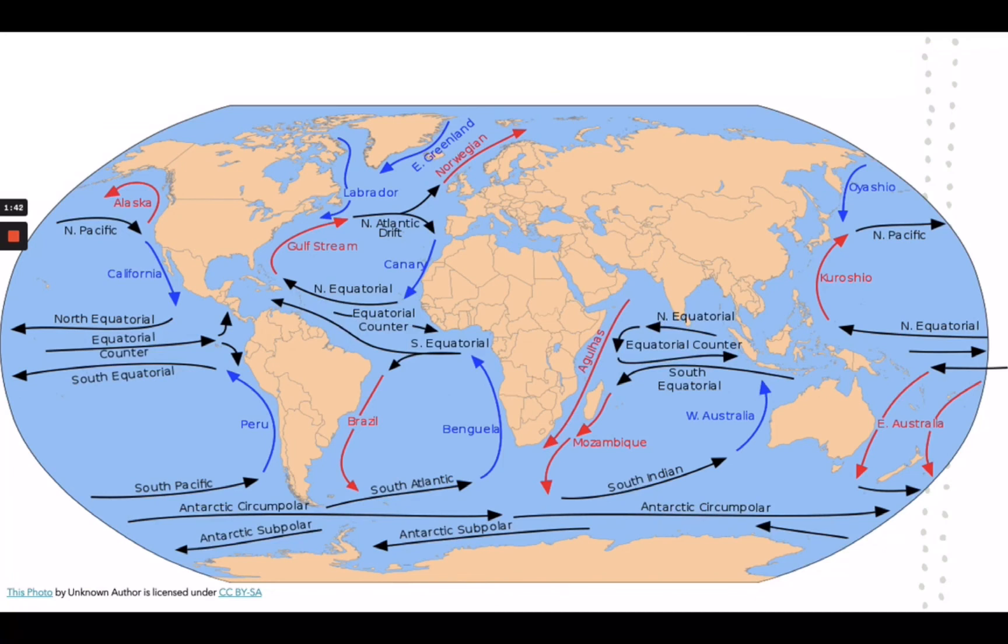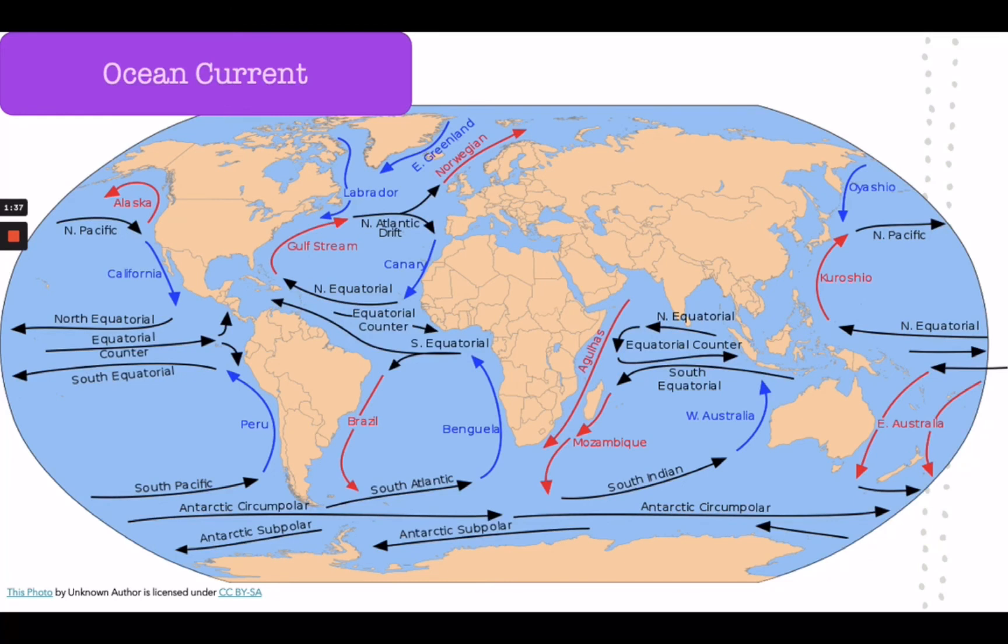The last factor affecting climate is ocean current. Ocean currents act much like a conveyor belt, regulating global climate, helping to counteract the uneven distribution of solar radiation reaching Earth's surface. Without currents in the ocean, regional temperatures would be more extreme: super hot at the equator and frigid towards the poles. Let's take a look at this ocean current. Red arrows mean that the ocean current is bringing hot water towards the pole, while blue arrows indicate that an ocean current is bringing cold water towards the equator.